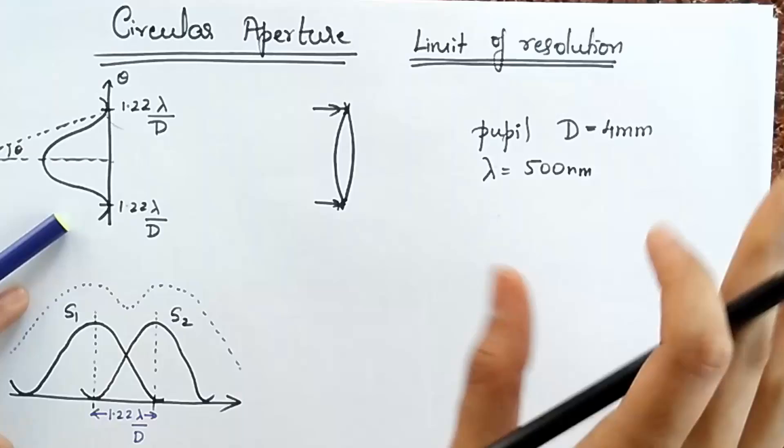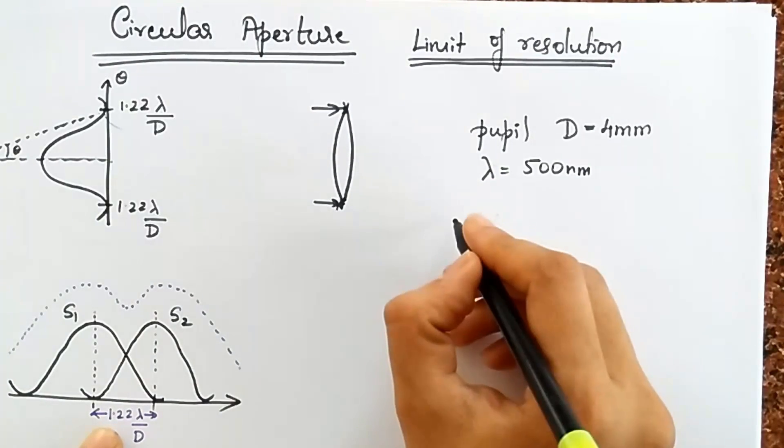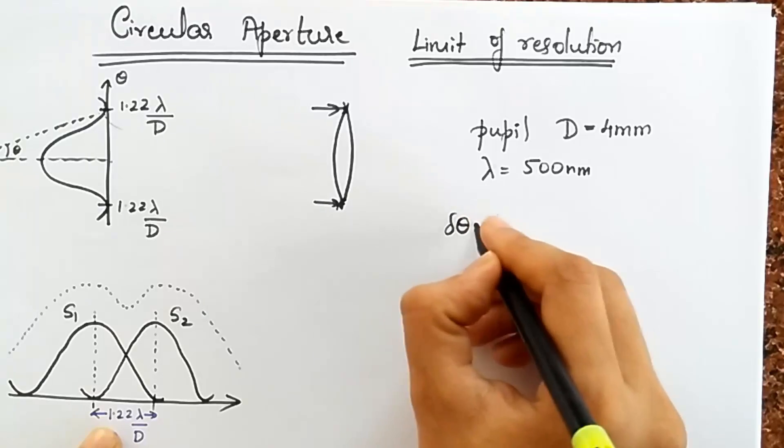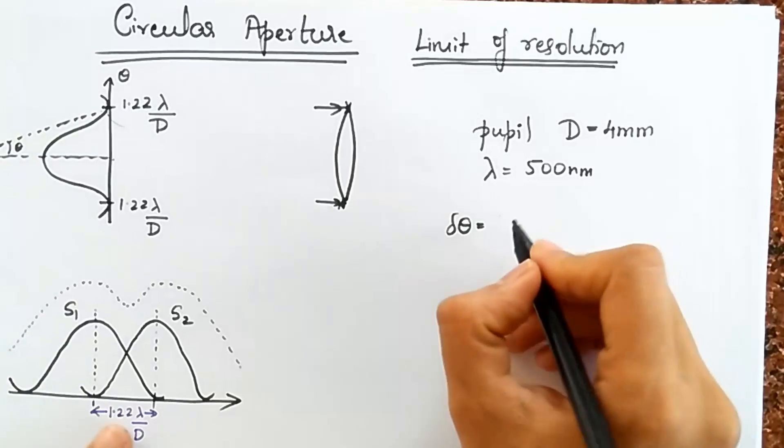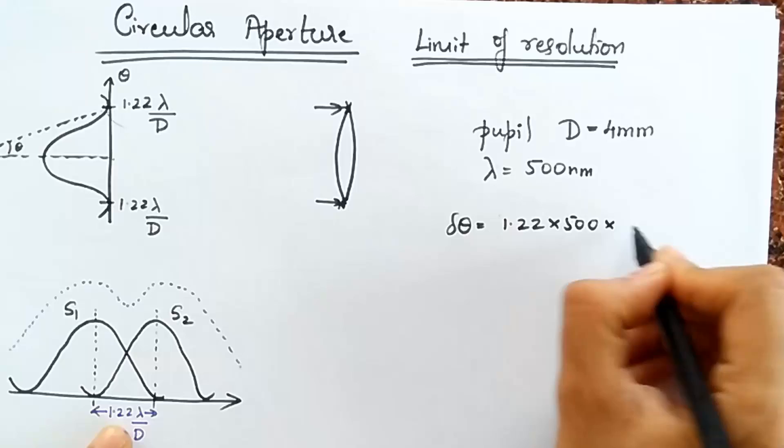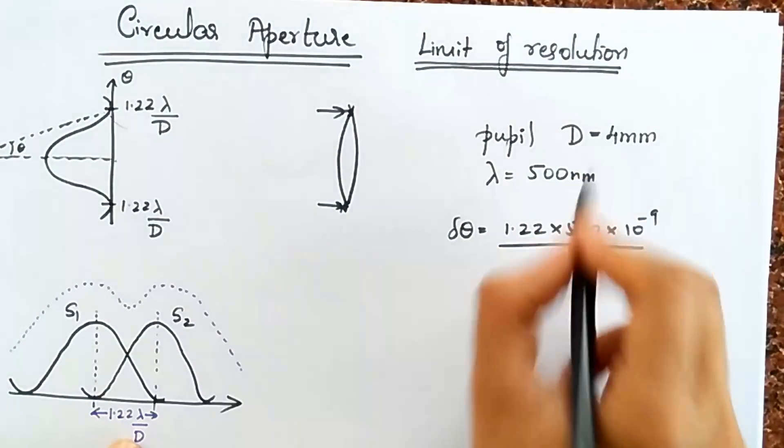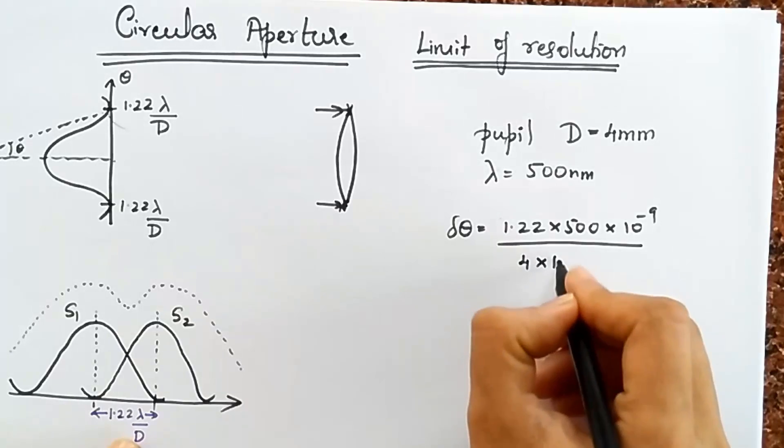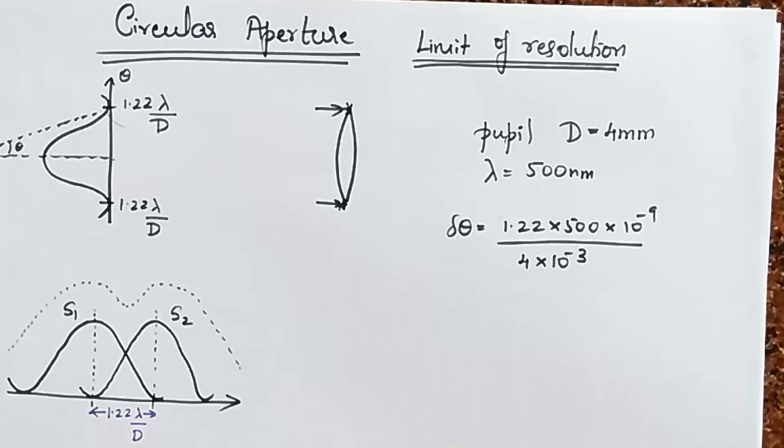I'll just take an average light and so then the limit of resolution we usually call it as delta theta, which is the smallest angular separation the two sources can subtend such that they look like 2, is going to be 1.22 into 500 nano. It's going to be 10 to the minus 9 divided by the diameter which is going to be 4 into 10 to the minus 3.